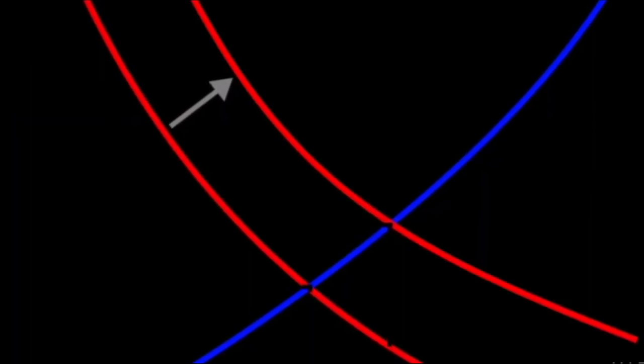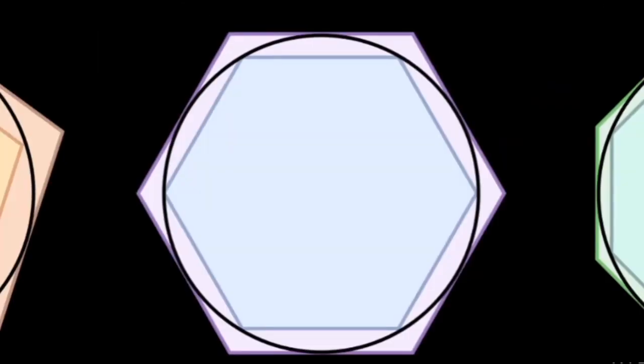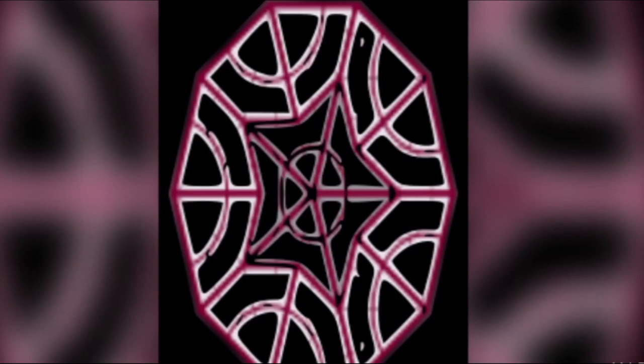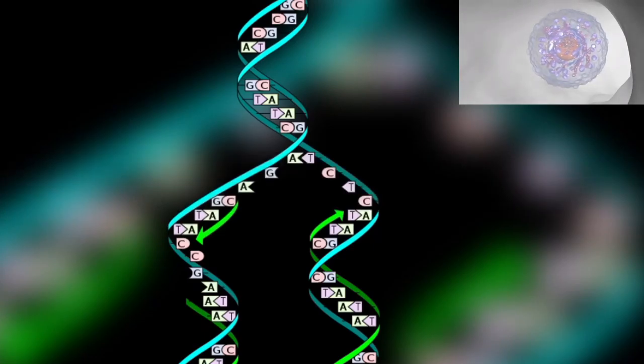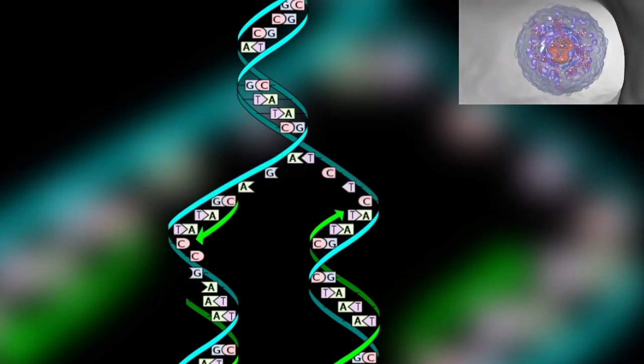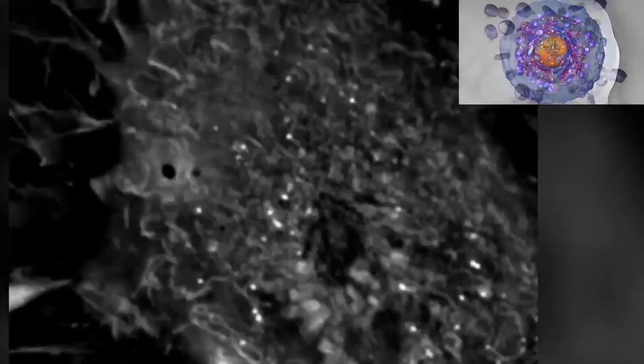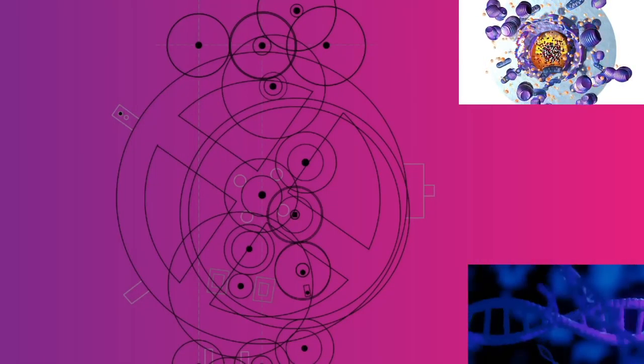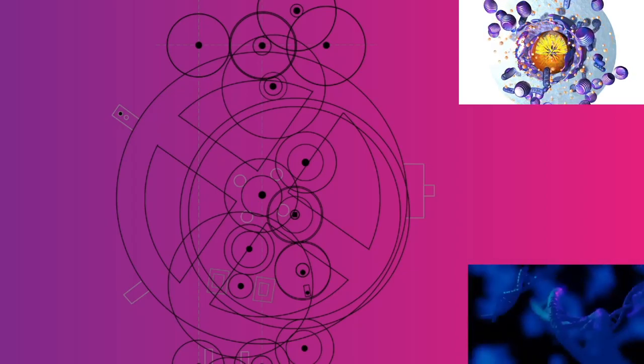Telophase 1: the first meiotic division effectively ends when the chromosomes arrive at the poles. Each daughter cell now has half the number of chromosomes, but each chromosome consists of a pair of chromatids. The microtubules that make up the spindle network disappear, and a new nuclear membrane surrounds each haploid set; the chromosomes uncoil back into chromatin. Cytokinesis — the pinching of the cell membrane in animal cells or the formation of the cell wall in plant cells — occurs, completing the creation of two daughter cells. However, cytokinesis does not fully complete, resulting in cytoplasmic bridges which enable cytoplasm to be shared between daughter cells until the end of meiosis 2. Sister chromatids remain attached during telophase 1.